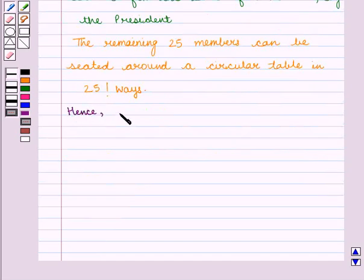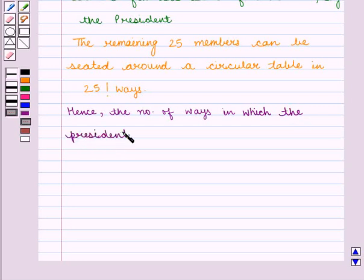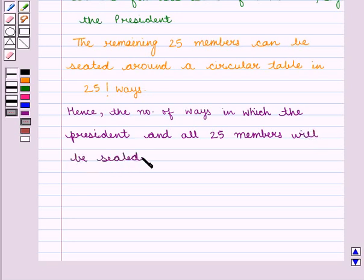Hence, the number of ways in which the president and all 25 members will be seated is given by 25 factorial, which is our final answer.